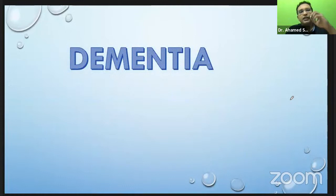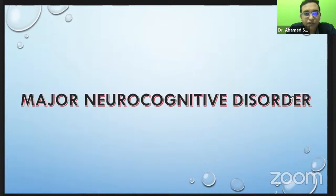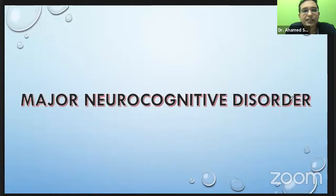Let's see what dementia is. The word dementia actually means madness or insanity. That is why DSM-5 classification has changed the term from 'dementia' to 'major neurocognitive disorder.' Major neurocognitive disorder is memory impairment with some other domains getting affected, which impacts activities of daily living. If memory impairment doesn't affect activities of daily living, it is called mild cognitive impairment.